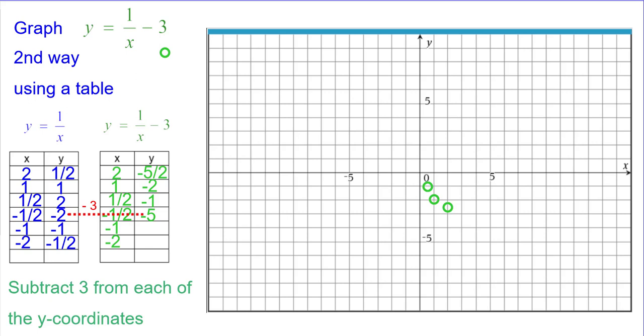Negative 2 minus 3 is negative 5, so negative 1 half negative 5. Negative 1 minus 3 is negative 4, so plotting negative 1 comma negative 4.